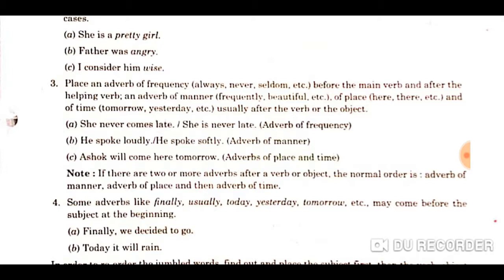Next example: 'She never comes late.' Here 'never' is an adverb of frequency, and 'comes' is the main verb, so 'never' has been placed before the main verb. But in 'She is never late,' the linking verb 'is' is used, so the adverb of frequency 'never' has been placed after the linking verb 'is'. So the rule is: place an adverb of frequency like always, never, seldom, etc. before the main verb and after the helping verb.